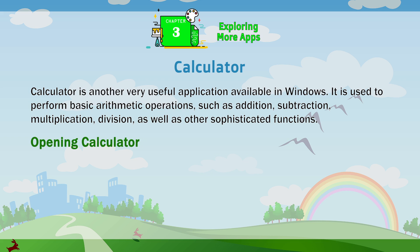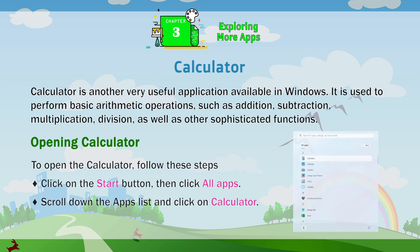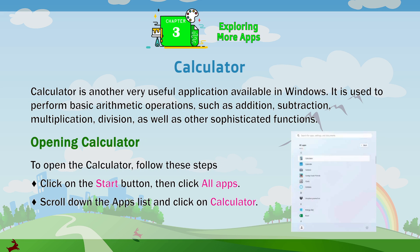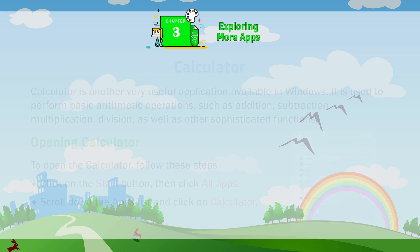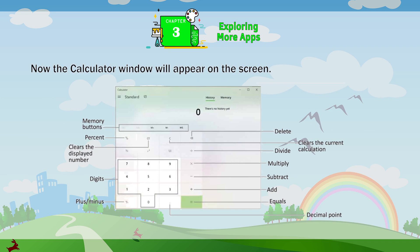Opening Calculator. To open the Calculator, follow these steps. Click on the Start button, then click All Apps. Scroll down the Apps list and click on Calculator. Now the Calculator window will appear on the screen.